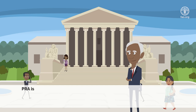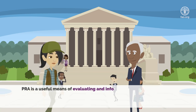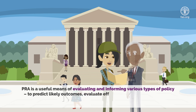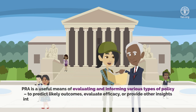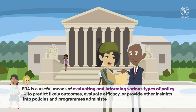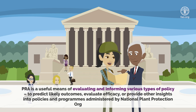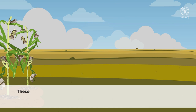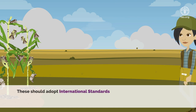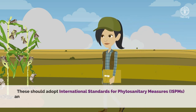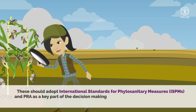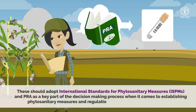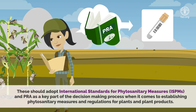Pest risk analysis is a useful means of evaluating and informing various types of policy to predict likely outcomes, evaluate efficacy, or provide other insights into policies and programs administered by national plant protection organizations. These should adopt international standards for phytosanitary measures and pest risk analysis as a key part of the decision-making process when it comes to establishing phytosanitary measures and regulations for plants and plant products.